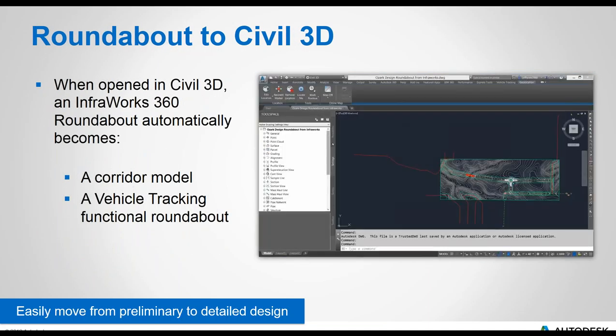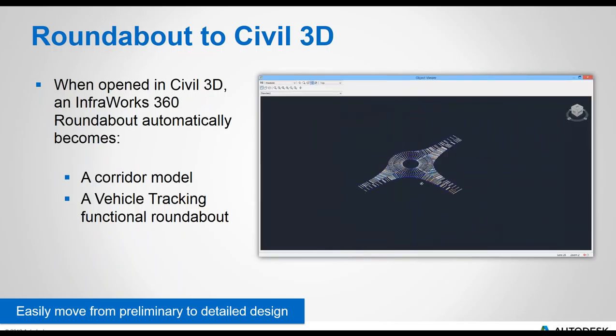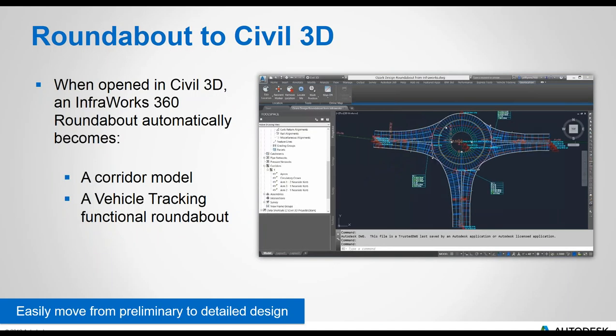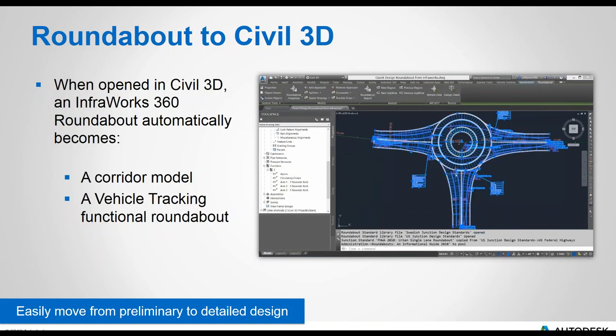In another example of improved interoperability, when you open a roundabout created in InfraWorks 360 in Civil 3D, not only does it automatically become a corridor, it also becomes a functioning vehicle tracking roundabout. This means you can use Autodesk Vehicle Tracking tools to continue your detailed design of that roundabout, and you can start changing the design standards applied to it through the AVT tools.